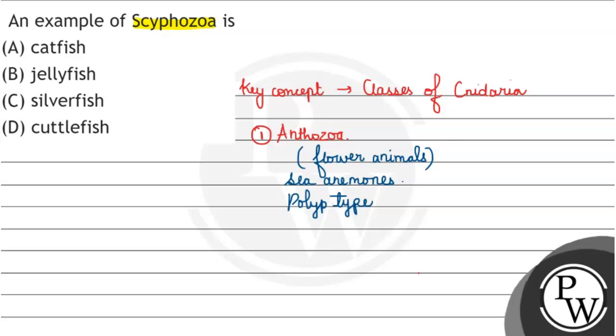The second class is Scyphozoa. Scyphozoa includes jellyfishes, and these are jellyfishes which are bell-shaped.